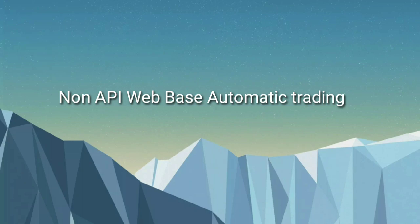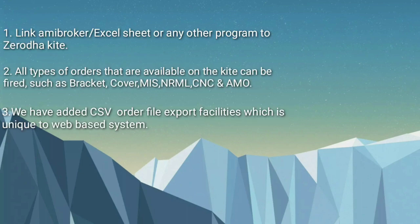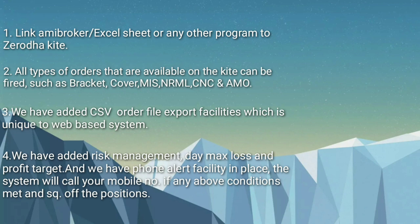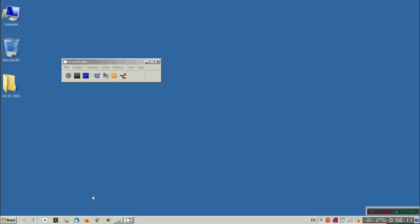Hello guys, this is from AutoNAC. We have developed a non-API based automatic trading system. You don't need to subscribe for a 2000 monthly fee — this is a one-time payment and you can use it as long as you want. You can link it via Amibroker, Excel, or any other program. You can fire many types of orders: bracket order, cover order, and basket order.